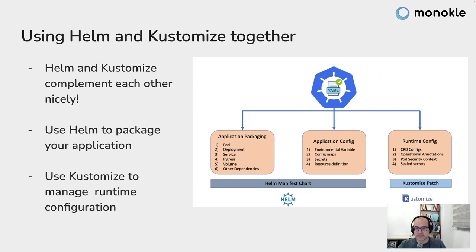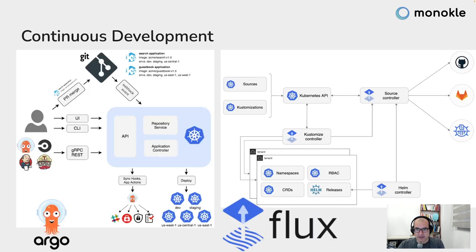Helm and Kustomize can actually be used together. Think of the application package and its manifests — the resources, configuration, and environment variables — that fits into Helm because you know them beforehand, so you can define them in a values file and deploy. But often you also have runtime configuration like security context or sealed secrets, and for that Kustomize is the best place. Tools like Flux and Argo include ways of using both Helm and Kustomize in their workflows.